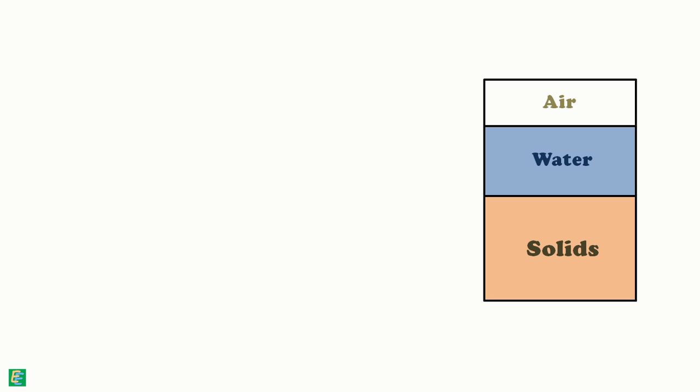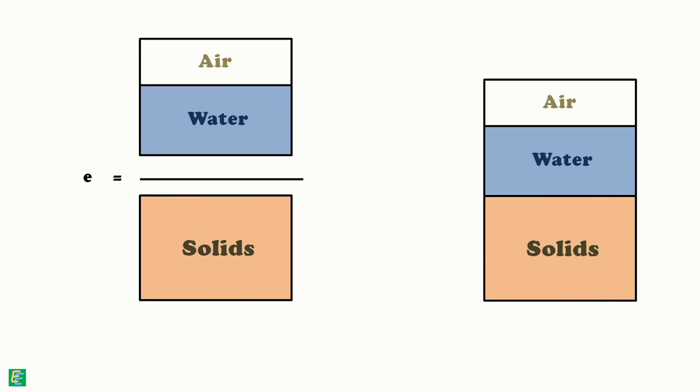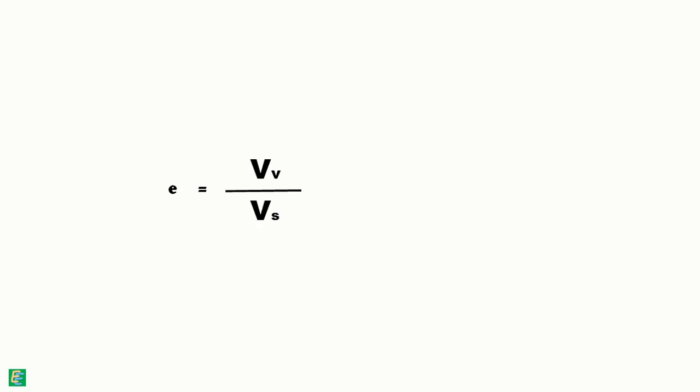This is the phase diagram of a partially saturated soil sample. Void ratio of this soil sample is defined as the ratio of the space occupied by the voids (volume of voids) to the space occupied by the solids (volume of solids). Equivalently, we can write volume of solids as total soil volume minus volume of voids.